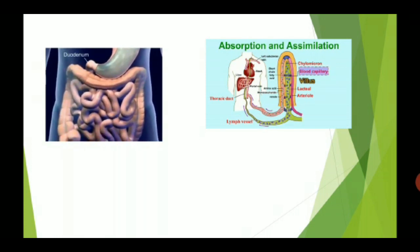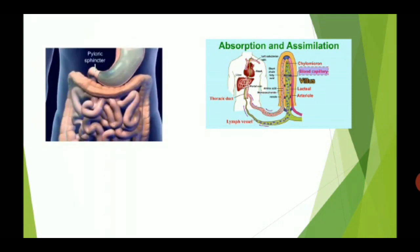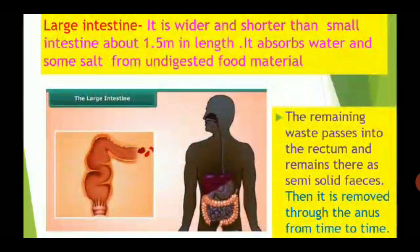The utilization of absorbed nutrients into cell components is called assimilation. The large intestine is the last organ of the digestive system; it is about 1.5 meters in length. It helps in absorbing water and in removing undigested solid waste from the body in the form of feces through an opening called the anus.